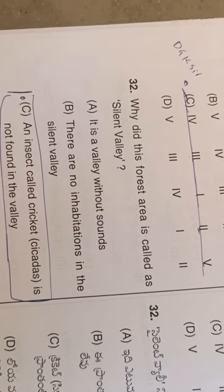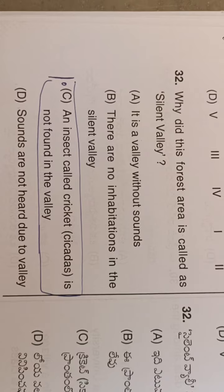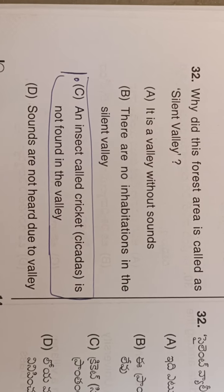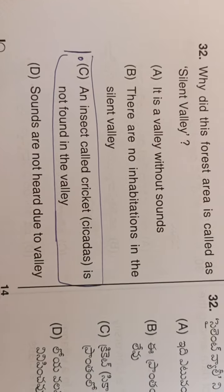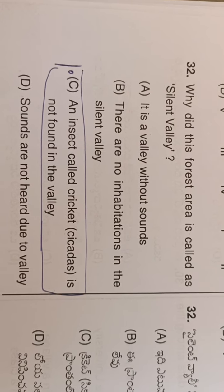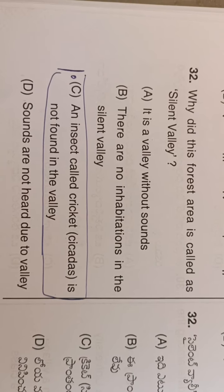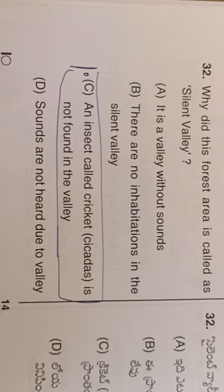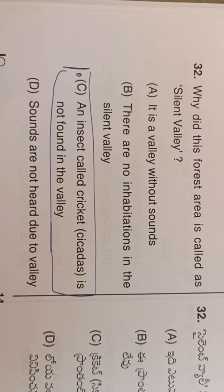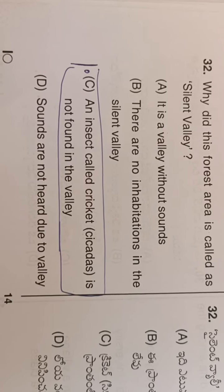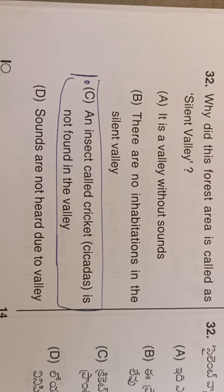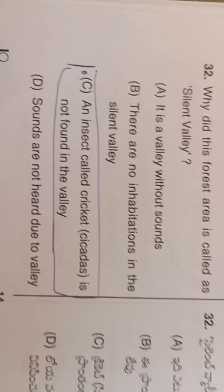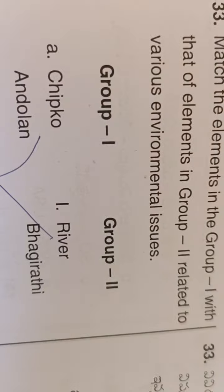Silent Valley: Why is this forest area called Silent Valley? In 1843 or 1847, the British used the term 'Silent Valley.' The reason is option C — an insect called cricket is not found in the valley. Silent Valley is located in Kerala.